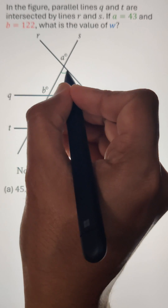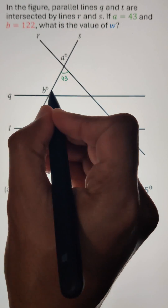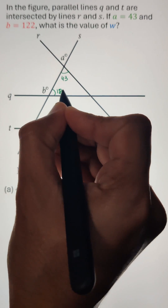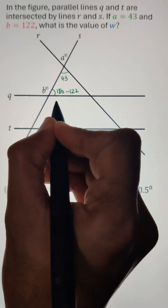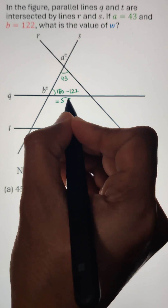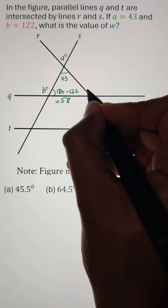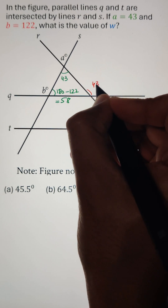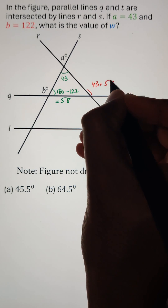If the value of A is 43 degrees and B is 122 degrees as shown in the figure, can you calculate the angle W?